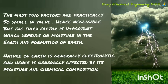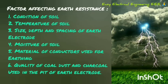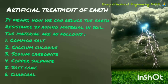Nature of earth is generally electrolytic and hence it is greatly affected by its moisture and chemical composition. What are the factors which influence the earth resistance? 1. Condition of soil, 2. Temperature of soil, 3. Size, depth and spacing of earth electrode, 4. Moisture of soil, 5. Material of conductor used for earthing, 6. Quality of coal dust and charcoal used in the pit of earth electrode.